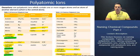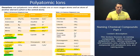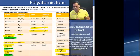Now that we've taken a look at the names of the common polyatomic ions, let's go ahead and see how we would name compounds containing polyatomic ions.